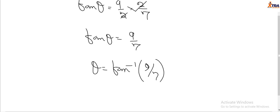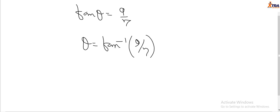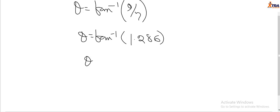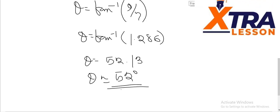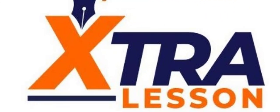Let's divide 9 over 7. We have theta equals arctan of 1.286. So theta equals arctan 1.286, which equals 52.13. So theta is approximately 52 degrees. The angle between the two lines is 52 degrees.